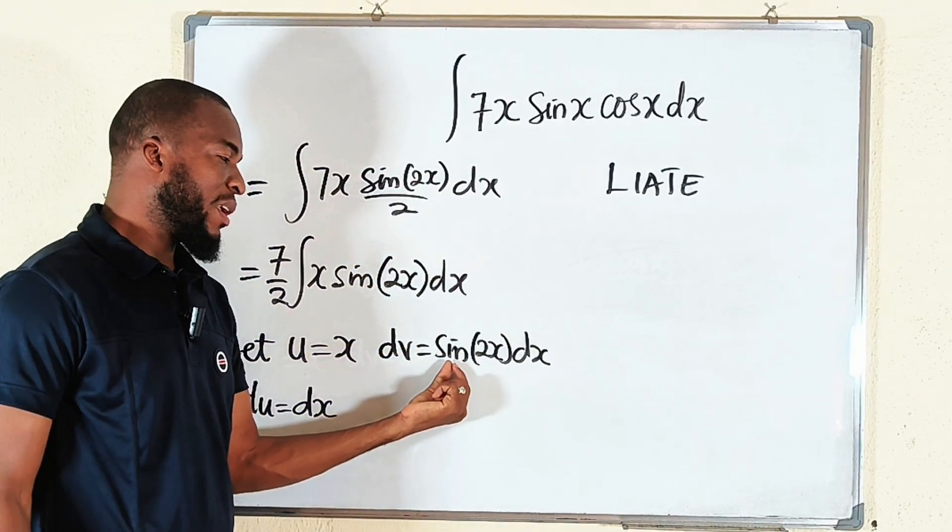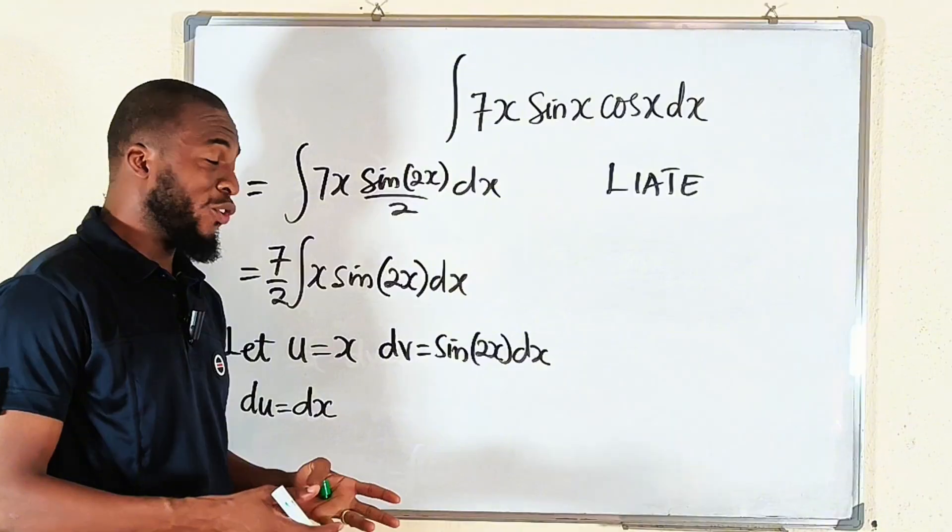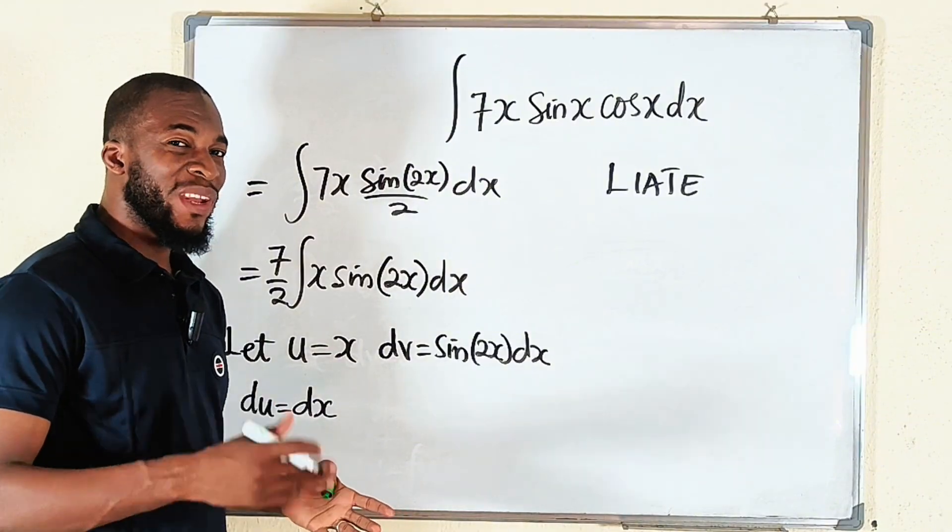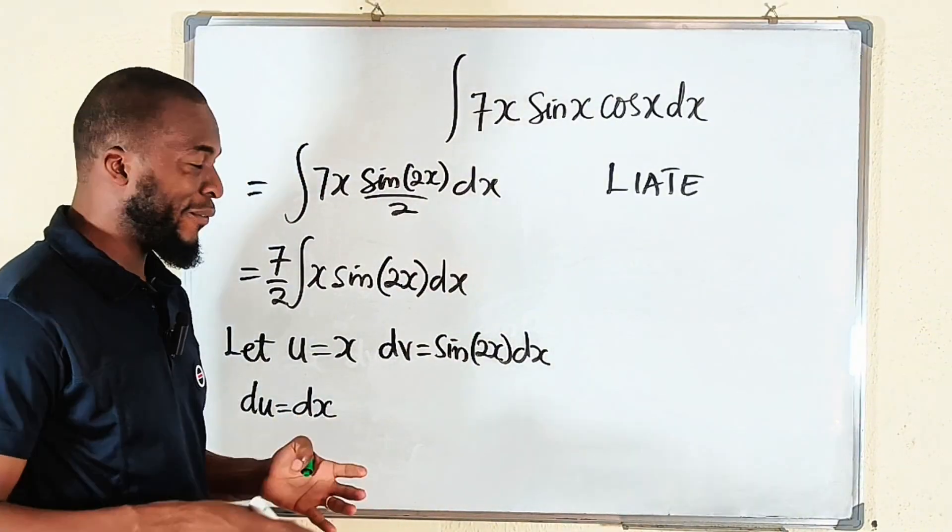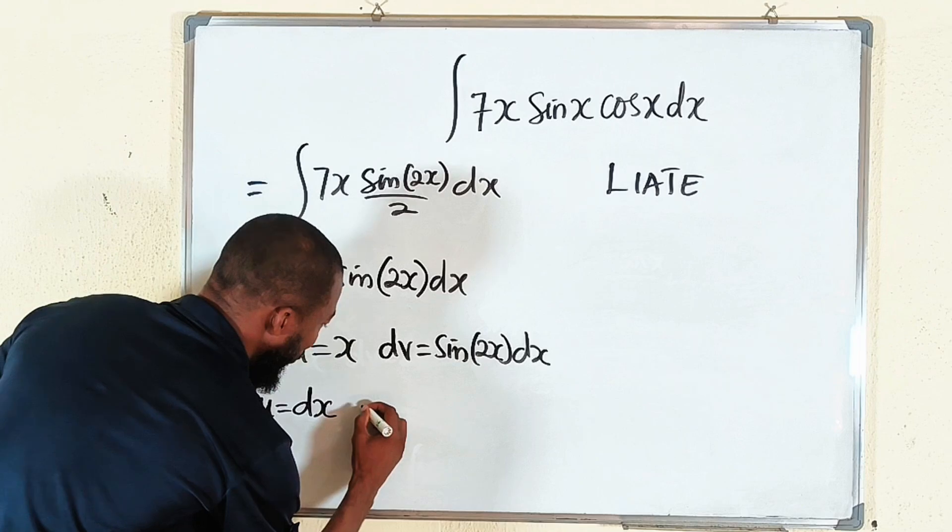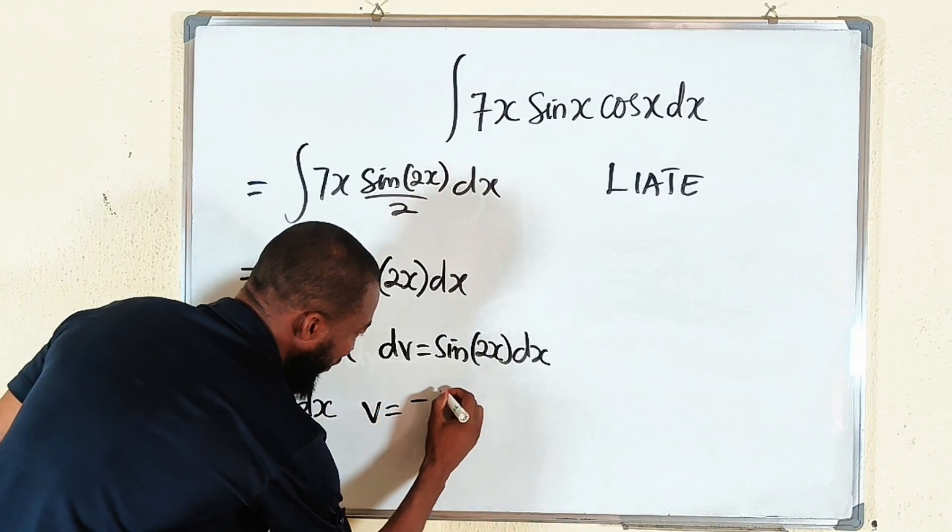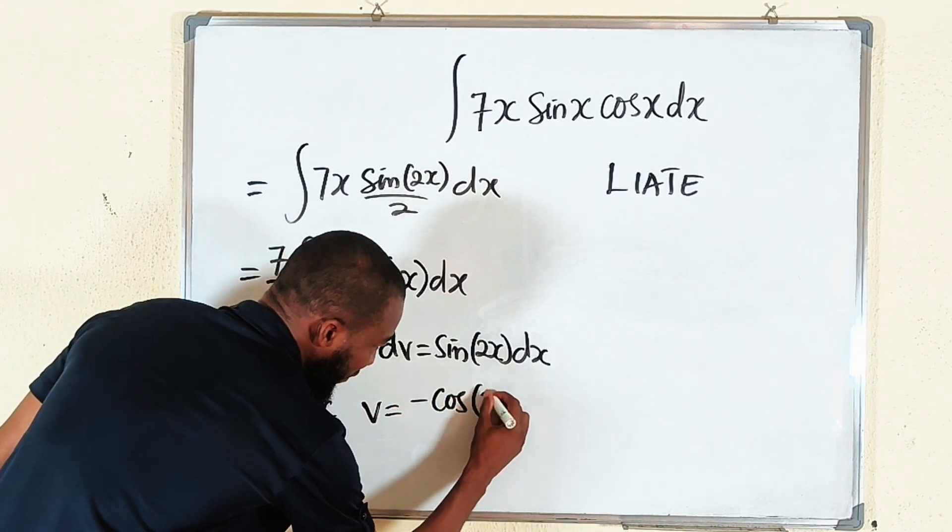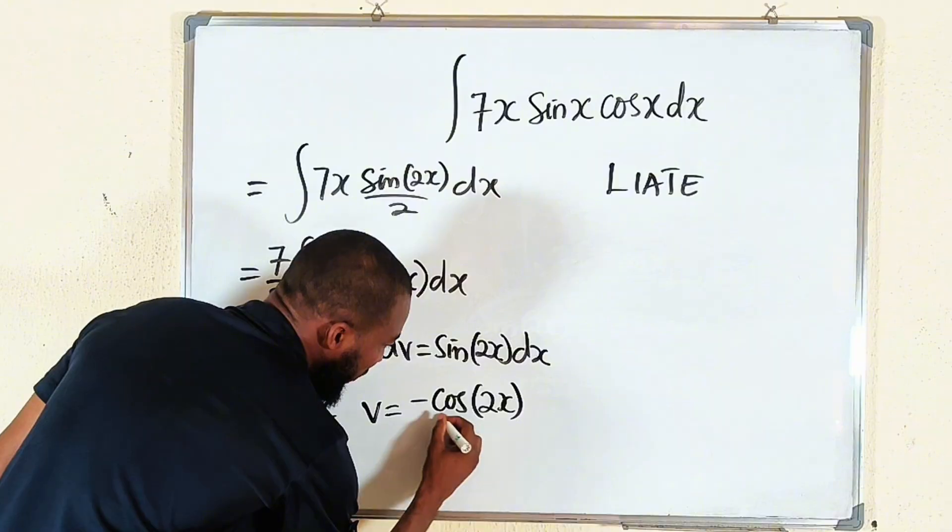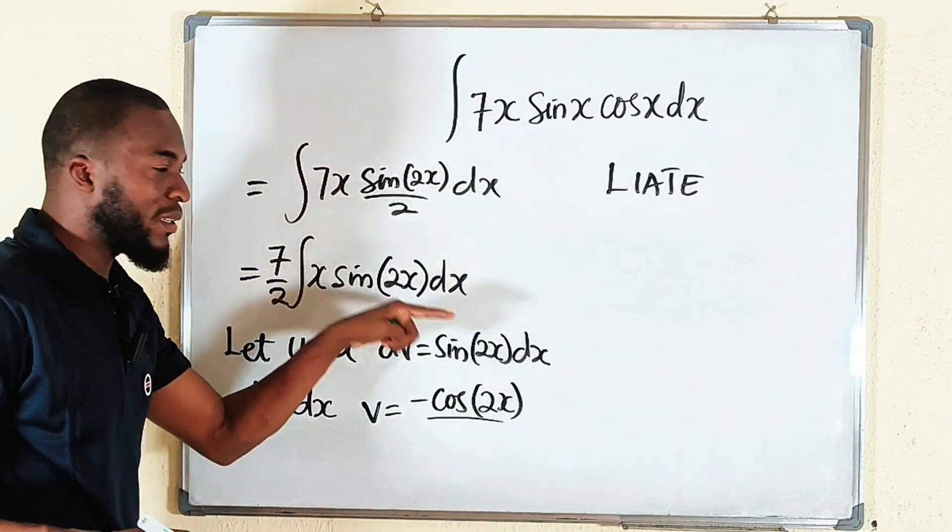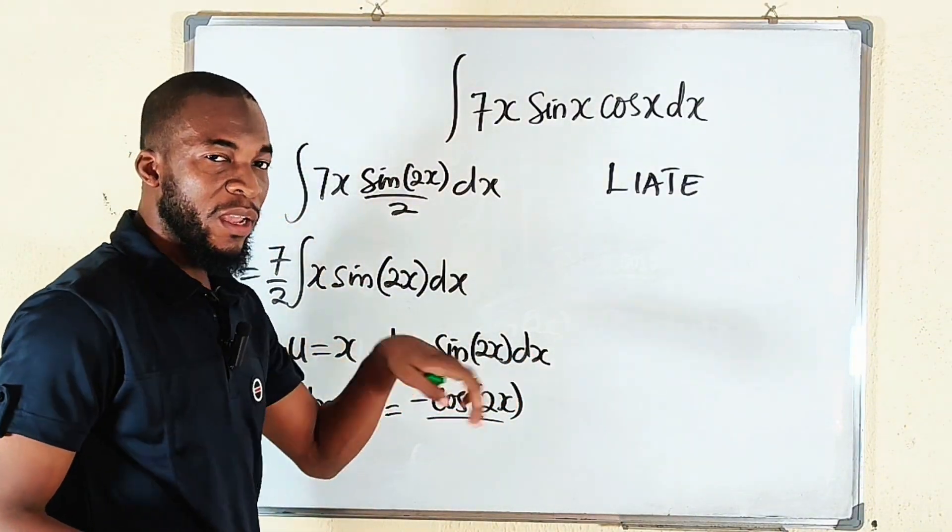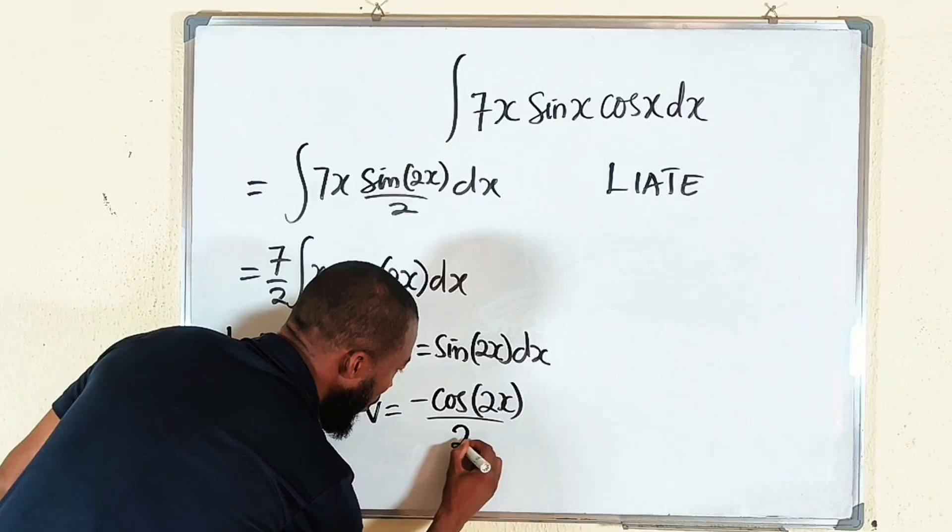Integrate this. Remember if you integrate sin of a function, it is going to give you negative cos of the same function. So v is equal to negative cos of the same function, but divide by the derivative of that inner function which is 2x. Its derivative is just 2.